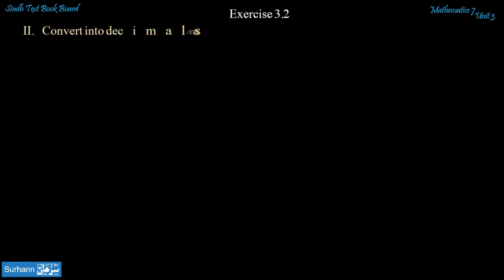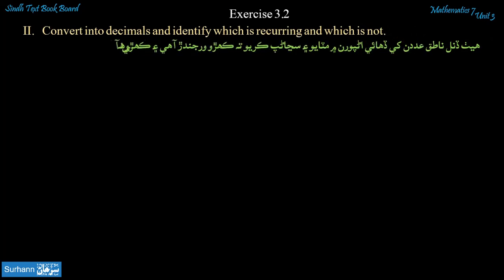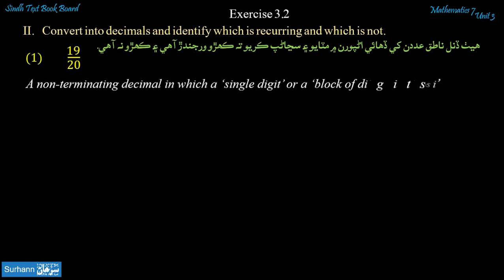In exercise 3.2, question number two, it is said to convert into decimals and identify which is recurring and which is not. But before starting problem number one, let us understand what is a recurring decimal. A non-terminating decimal in which a single digit or block of digits is repeated infinite number of times after the decimal point is called a recurring decimal.